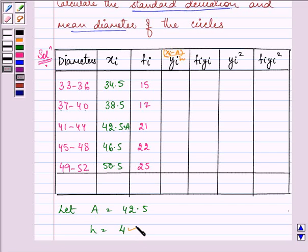That is taken to be as 4. So, we have 34.5 minus 42.5 divided by 4, giving us minus 2. Then in the same manner, we have minus 1, 0, 1 and 2.